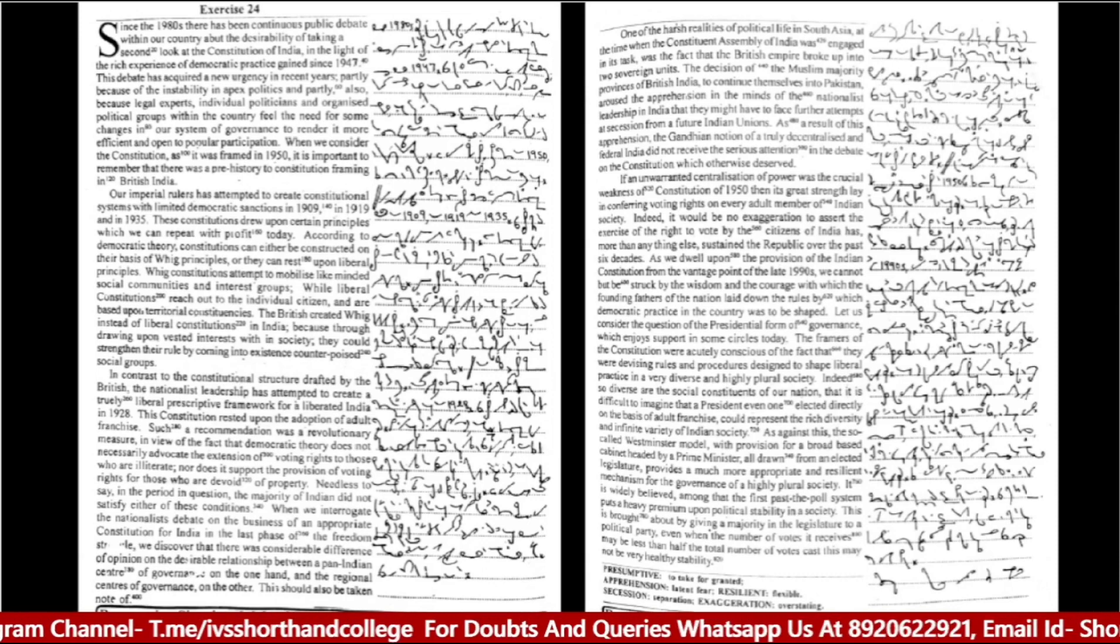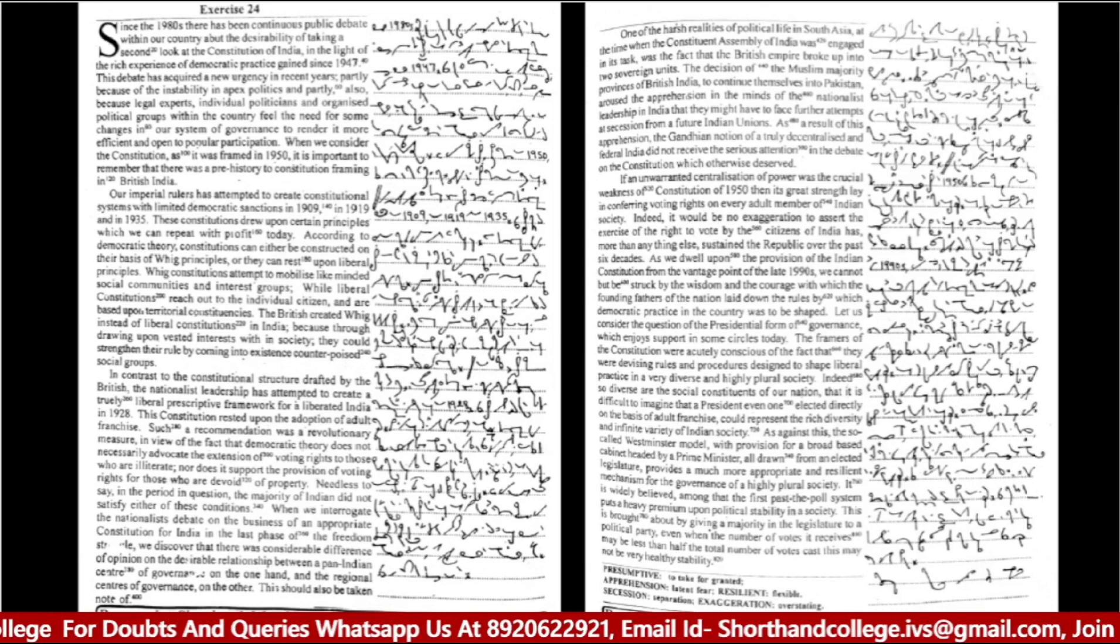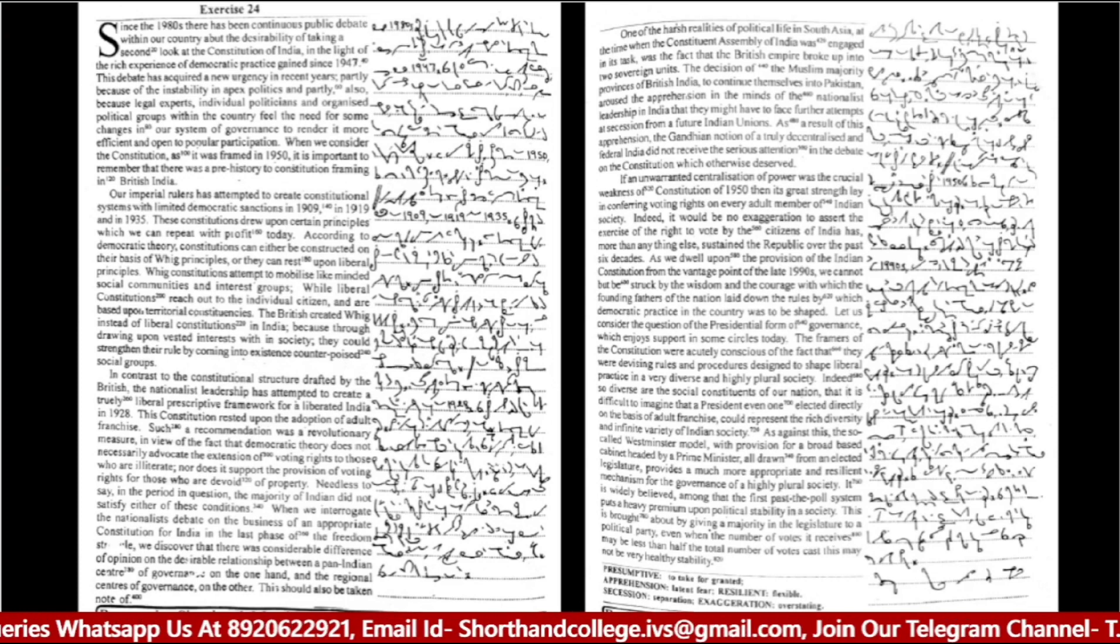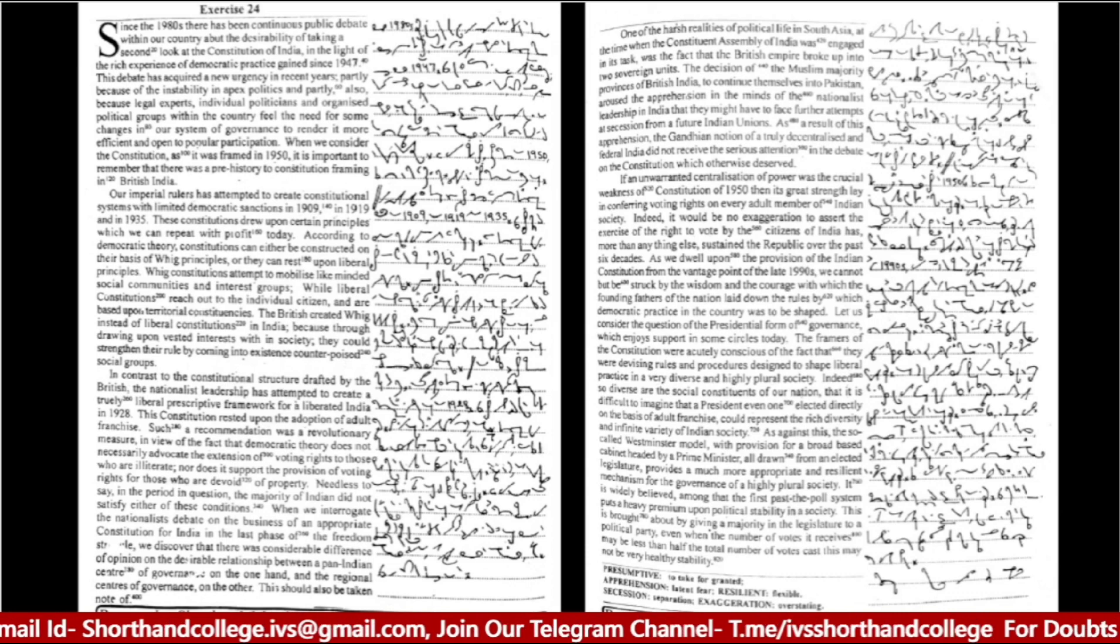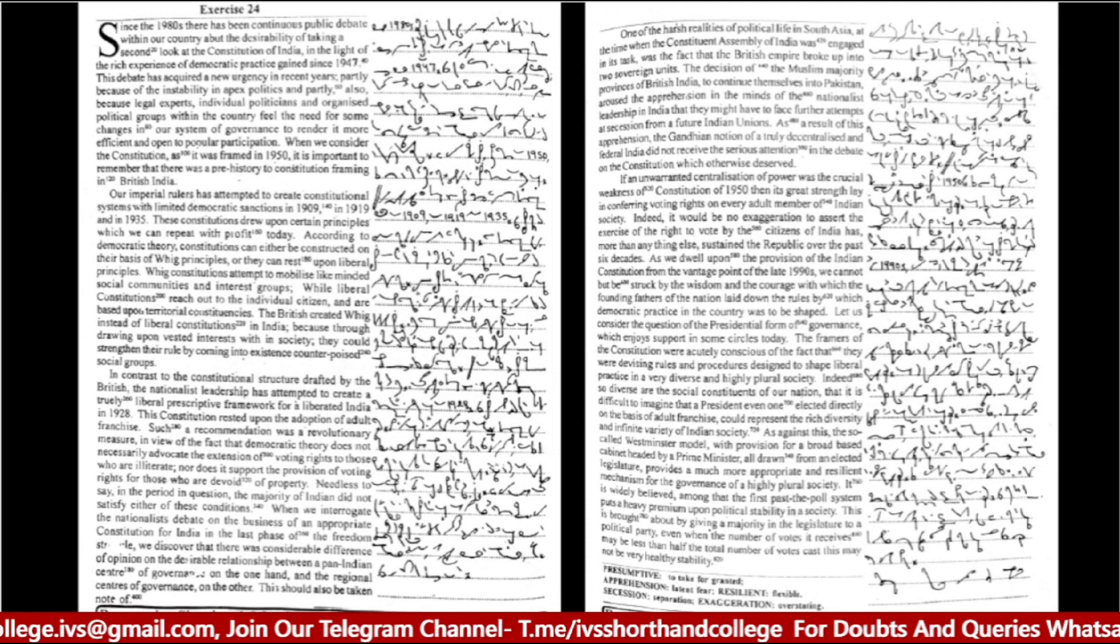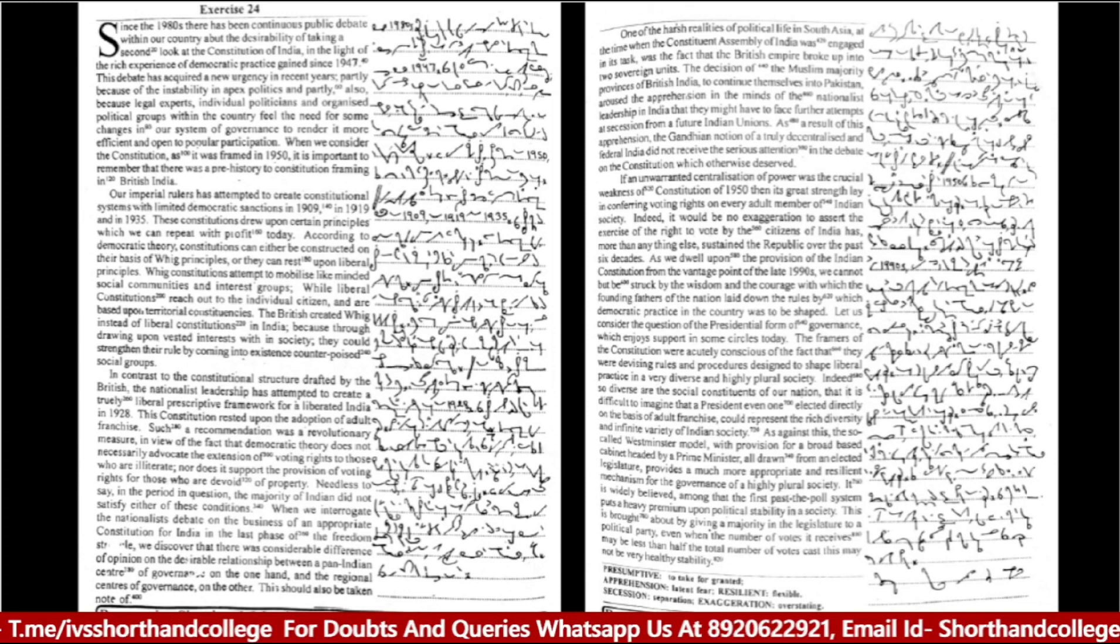One of the harsh realities of political life in South Asia at the time when the Constituent Assembly of India was engaged in its task was the fact that the British Empire broke up into two sovereign units. The decision of the Muslim majority provinces of British India to constitute themselves into Pakistan aroused the apprehension in the minds of the nationalist leadership in India that they might have to face further attempts at secession from a future Indian union.